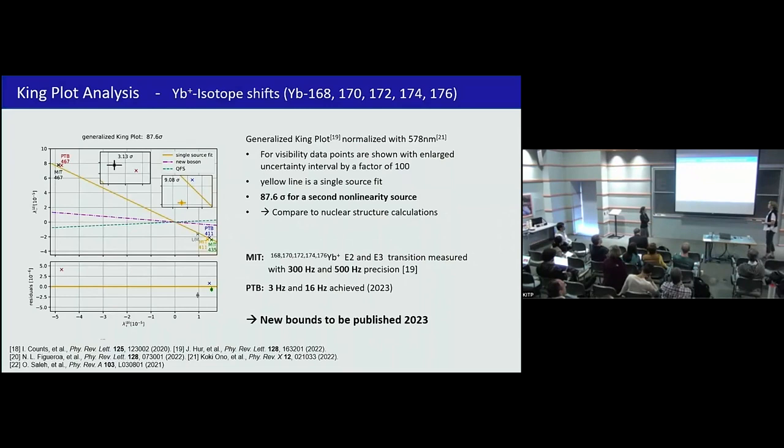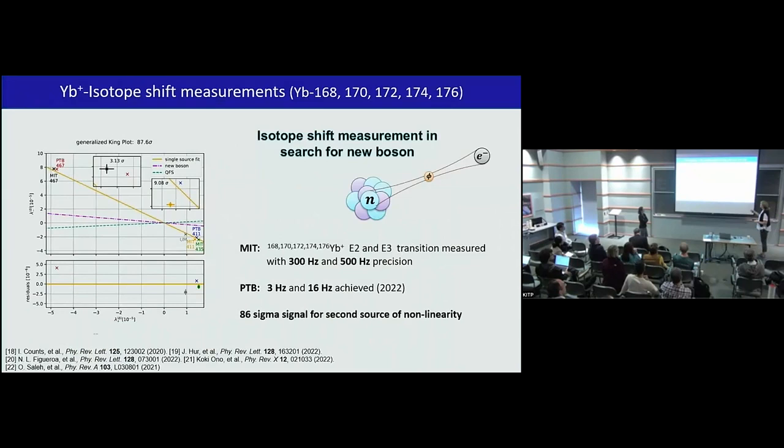The problem was that they don't have a fixed reference, so they had to predict the drift of the ULE cavity and every time when you jump from isotope to isotope and lock again, they had different residual amplitude modulation and that gave an offset. So he repeated his measurements now and now he agrees with our values. So this is very good. Now it comes about this generalized King plot and the problem is really now, Julian Berengut always calls it the spurions.